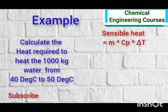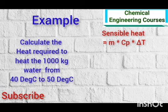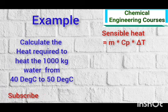That is, mass flow rate into specific heat into delta T. So in our case, M is the water quantity which is 1000 kg. CP is